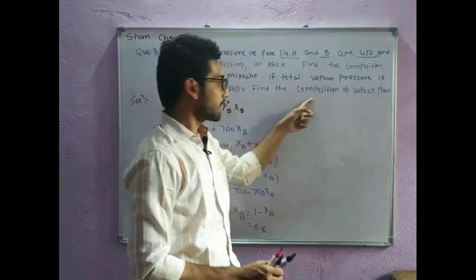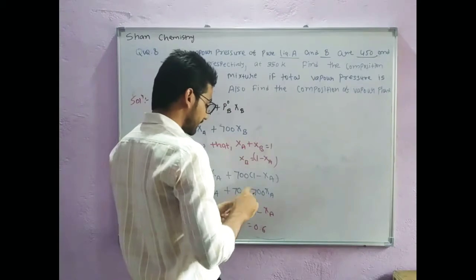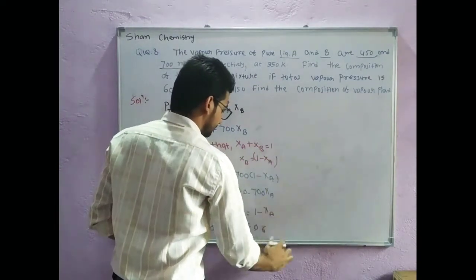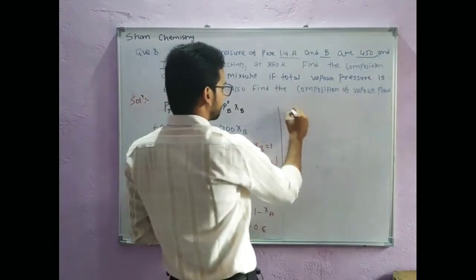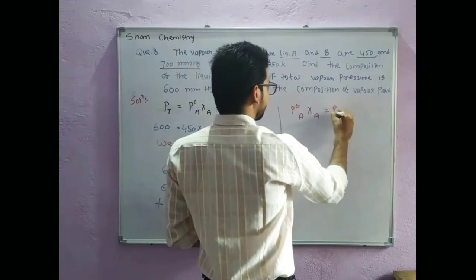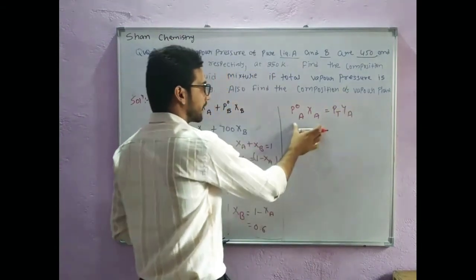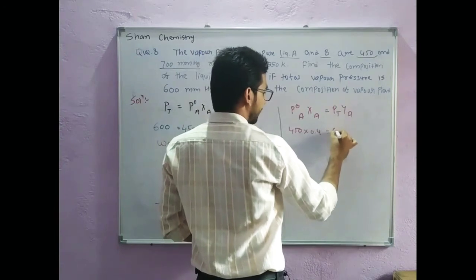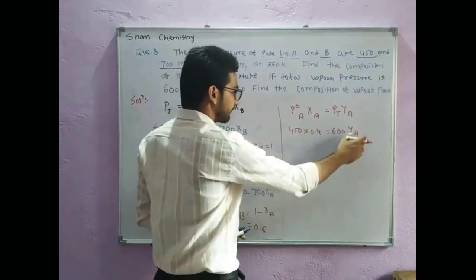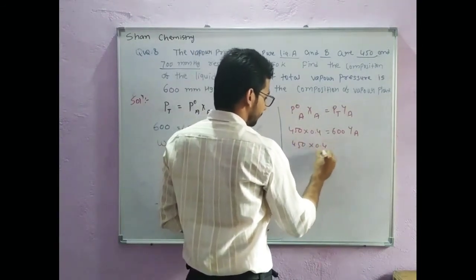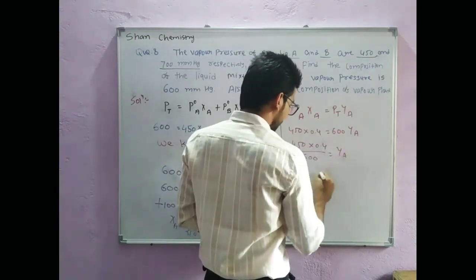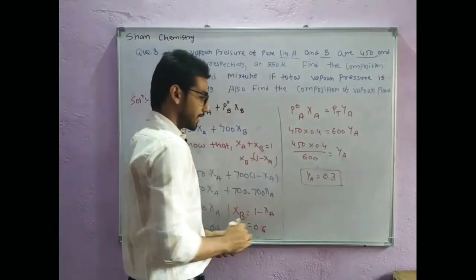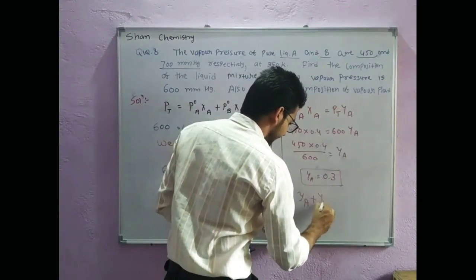Now we need to calculate the composition of the vapor phase. The formula for vapor phase is: P°_A times X_A equals P_total times Y_A. For component A: P°_A is 450, X_A is 0.4, and P_total is 600. So Y_A equals 450 times 0.4 divided by 600, which gives Y_A equals 0.3.